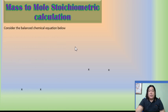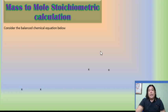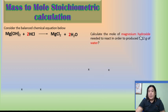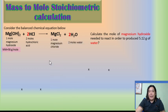Mass-to-mole stoichiometric calculations: the only difference from mole-to-mass is that you start with a mass unit and end with moles. Let us use the same balanced equation. Calculate the moles of magnesium hydroxide needed to react in order to produce 5.12 grams of water. The molar masses used are: Mg(OH)₂ = 58 g/mol, MgCl₂ = 95 g/mol, and H₂O = 18 g/mol. Since only magnesium hydroxide and water appear in the problem, those are the only molar masses needed.